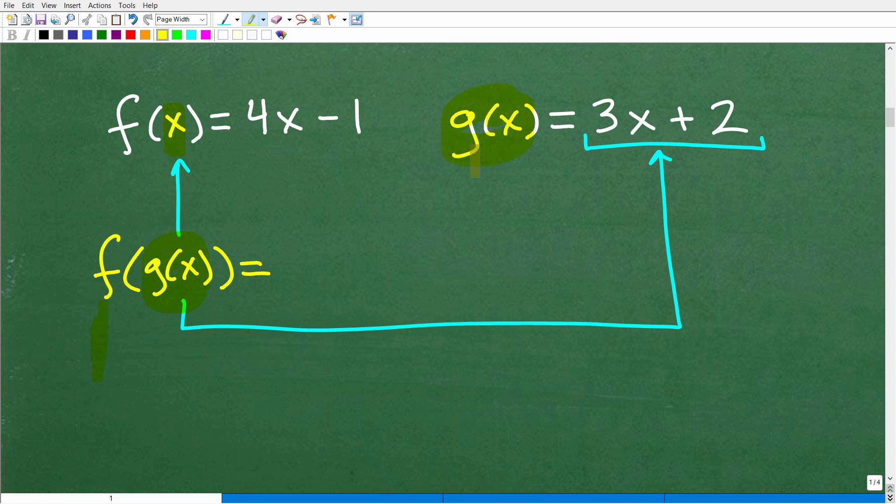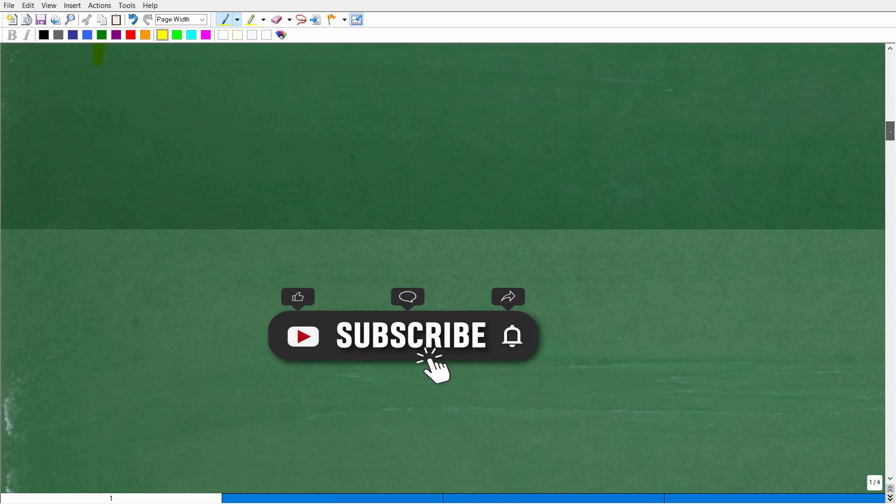Now, the g(x) function, this is the name of it, but the actual function is 3x plus 2. So what we're going to be doing here is we're going to replace this x with g(x), but it's not going to be the g(x) like this. It's going to be what it's equal to, 3x plus 2. All right. So if that makes sense, let's go ahead and take the next step and see how this works. But before we do that,